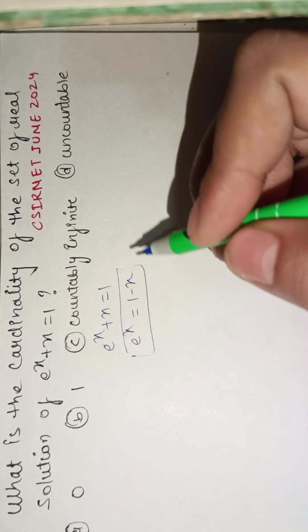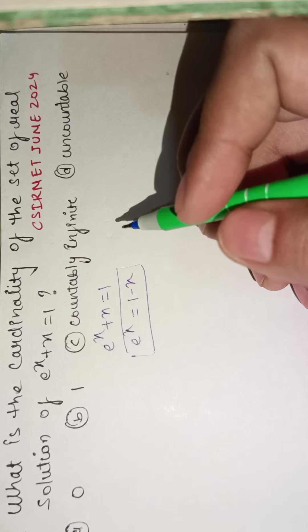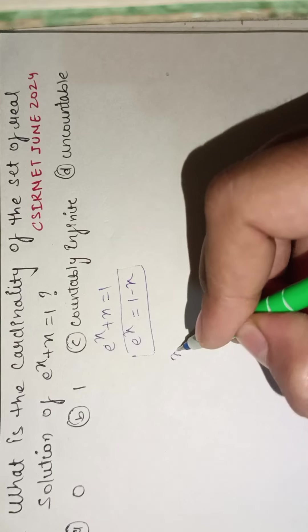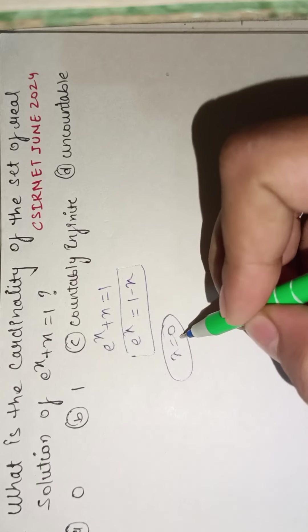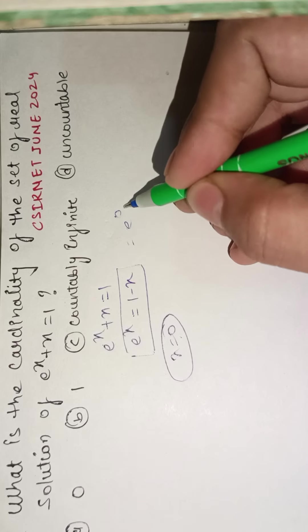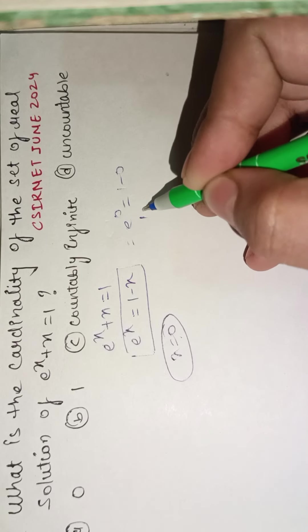Let's test x = 0. If we put 0 here, we get e^0 = 1, and 1 - 0 = 1, so we get 1 = 1.